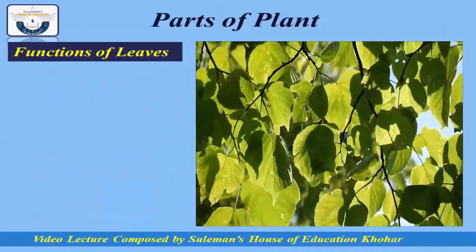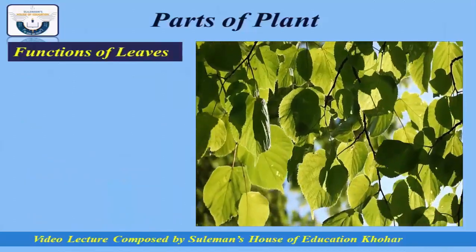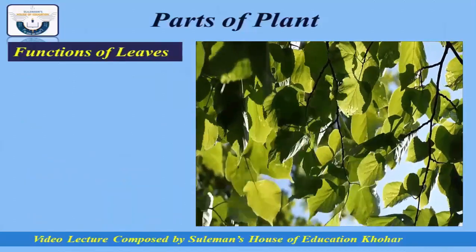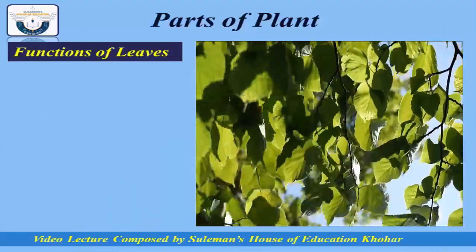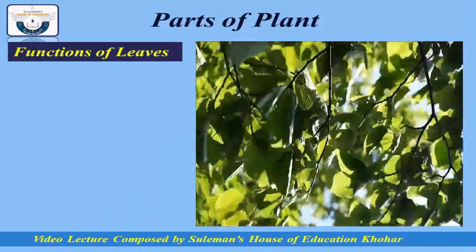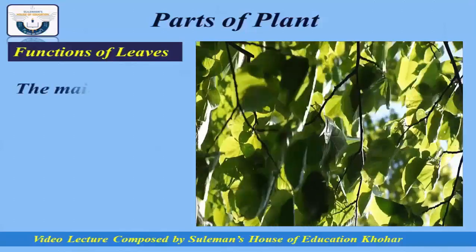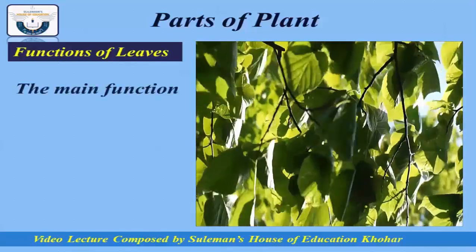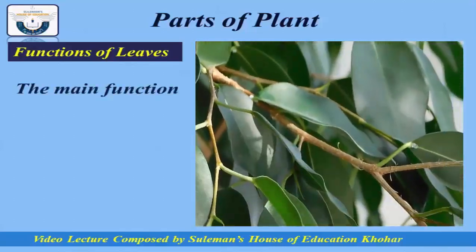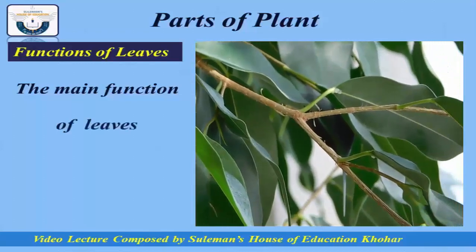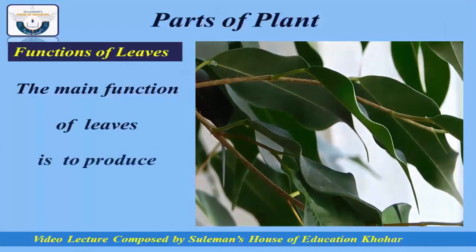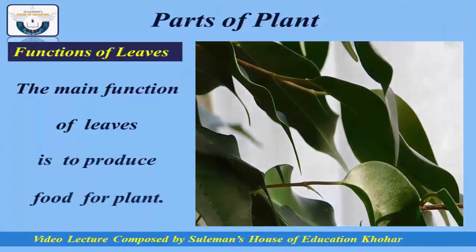Now we will see leaves and their different functions. Leaves are a very important part of a plant. In general, leaves are thin and flat organs of a plant. Leaves have a green pigment called chlorophyll. In the presence of sunlight, leaves prepare food for the plant, and this food is transported to the other parts of the plant.